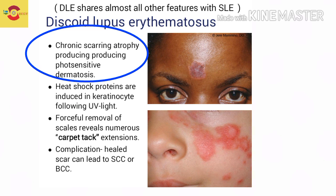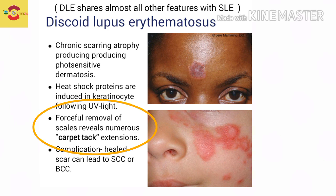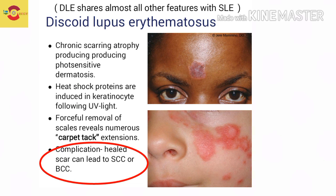Discoid Lupus Erythematosus is characterized by a chronic scarring, atrophy-producing photosensitive dermatosis. Heat shock proteins are induced in keratinocytes following UV light, which is the main implication in the pathogenesis of DLE. Forceful removal of scales reveals numerous carpet tack extensions. The main complication of DLE is that healed scars can lead to squamous cell carcinoma or basal cell carcinoma.